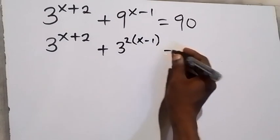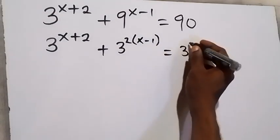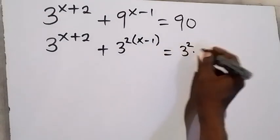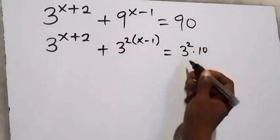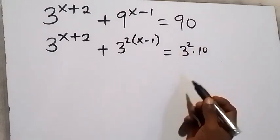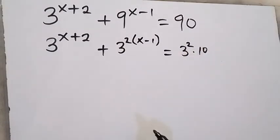This can be written as 3 raised to power 2, times 10. Because 3 raised to power 2 is 9, and 9 times 10 gives us 90.